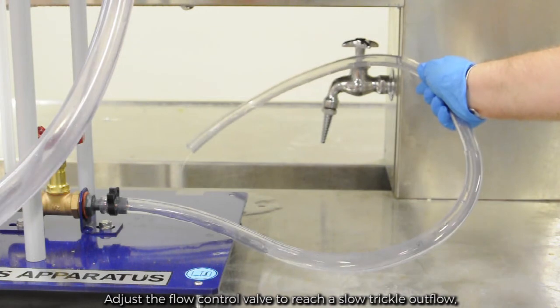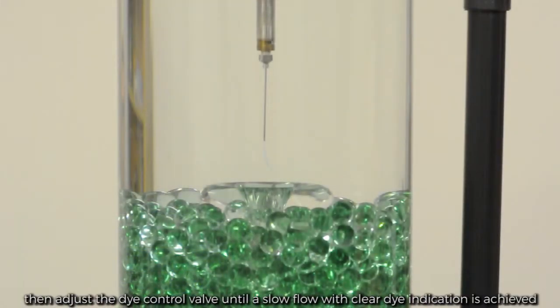Adjust the flow control valve to reach a slow trickle outflow, then adjust the dye control valve until a slow flow with a clear dye indication is achieved.